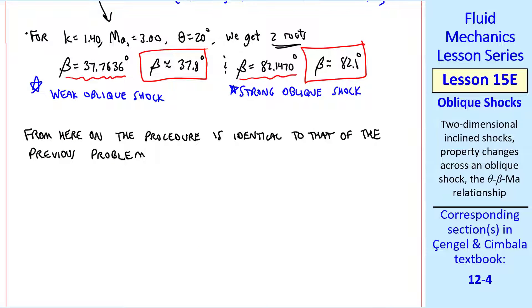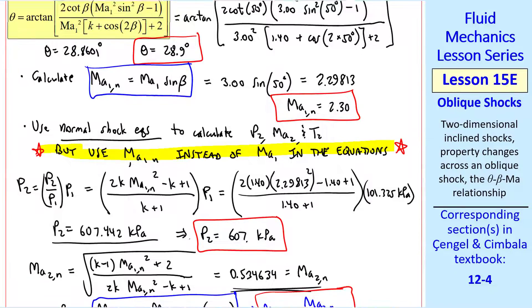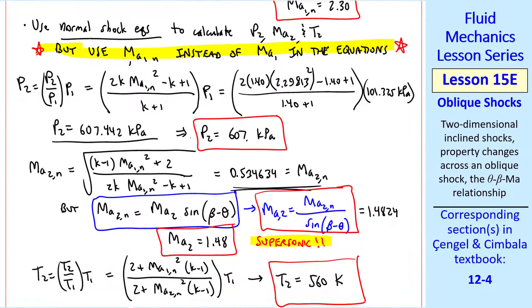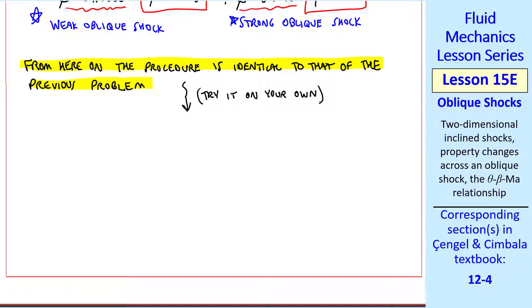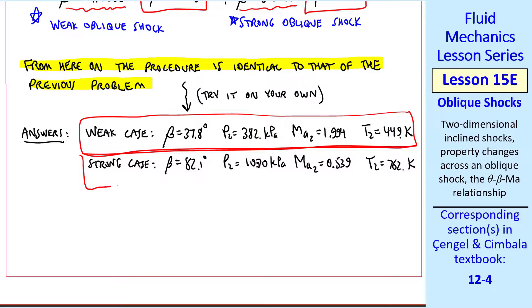Now that we know beta, from here on the procedure is identical to that of the previous problem. I'll do the calculations for both of these betas. Using exactly the same procedure that we had here in the previous problem, I'll let the students try it on their own, and I'll just give the answers. For the weak case, I get these results, and for the strong case, I get these answers.